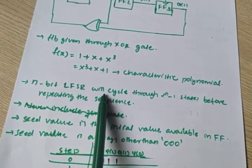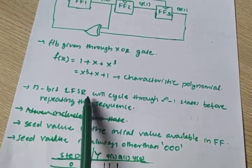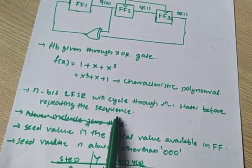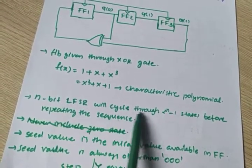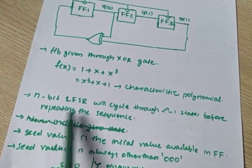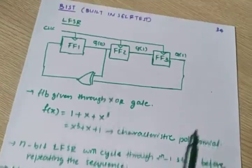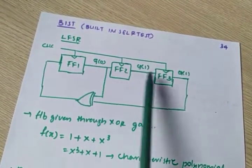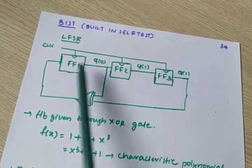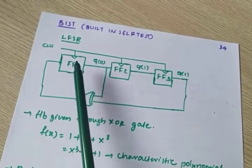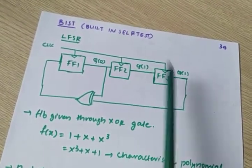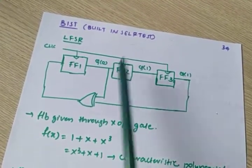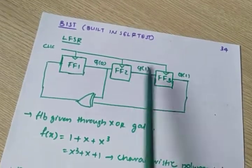For an n-bit LFSR, the LFSR will cycle through 2 raised to n states before repeating the sequence. Initially we feed all flip-flops values other than all zeros. The initial condition of the flip-flops is called the seed value, and the seed value should never be 0 0 0.